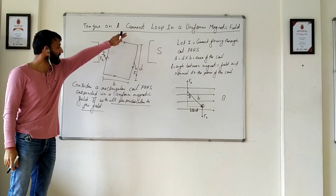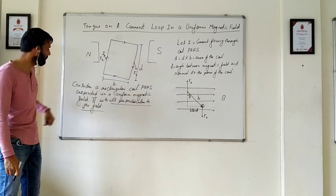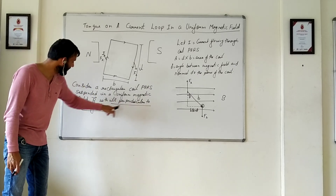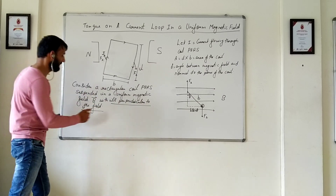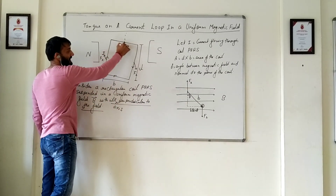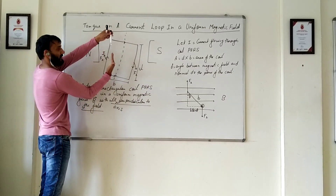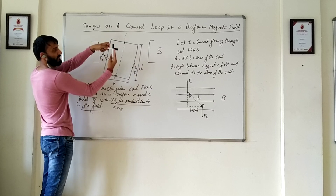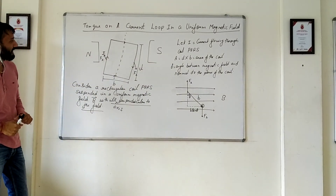Now L is the length of this rectangular loop and B is the breadth of this rectangular loop — rectangular coil PQRS. This coil is kept perpendicular to the field with its axis perpendicular to the magnetic field.